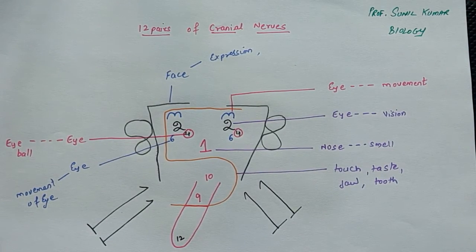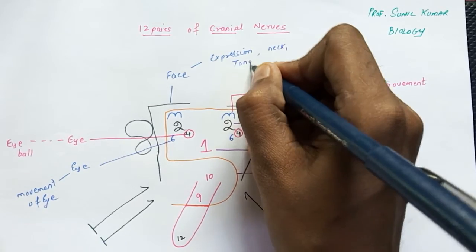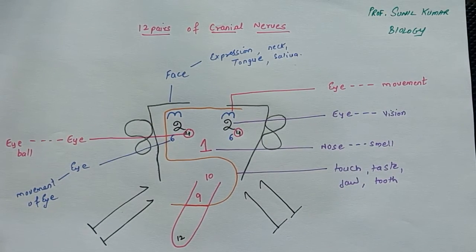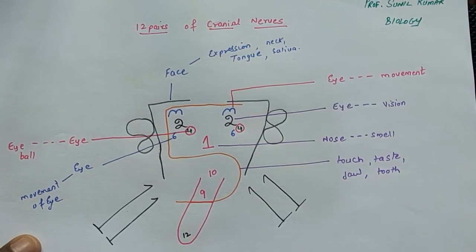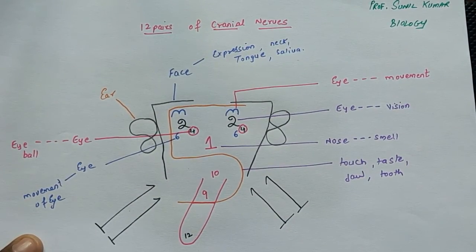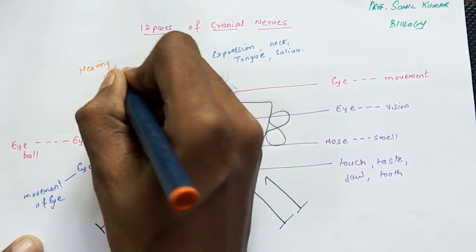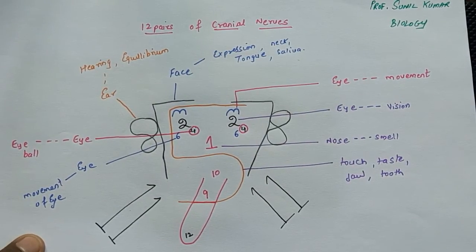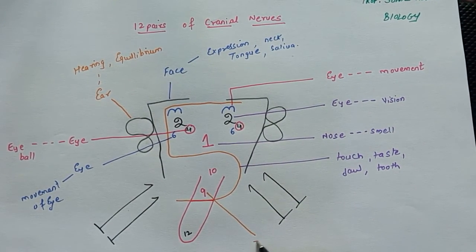The facial nerve — number seven — is responsible for facial expressions, movement of the neck, movement of the tongue, and saliva secretion, among other functions. Number eight has been drawn as the ear of the face, so it is clearly related to the ear. Its two functions are hearing and equilibrium.